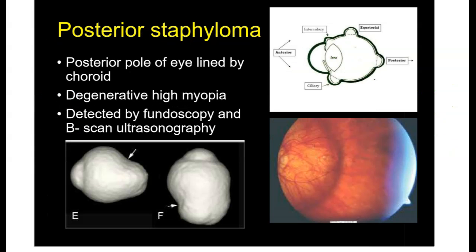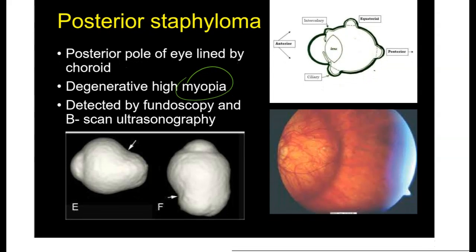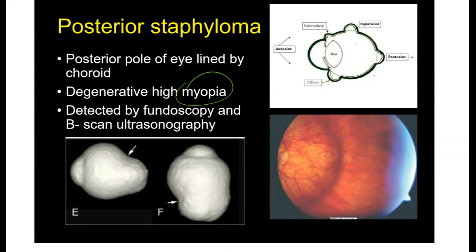In posterior Staphyloma, there is protrusion of the choroid behind the equator. This involves mostly the posterior pole of the eye. The most common cause of posterior Staphyloma is degenerative high myopia. Posterior Staphyloma is the most common type and myopia is the most common cause overall. The diagnosis is made through fundus examination and can be confirmed by B-scan ultrasonography.